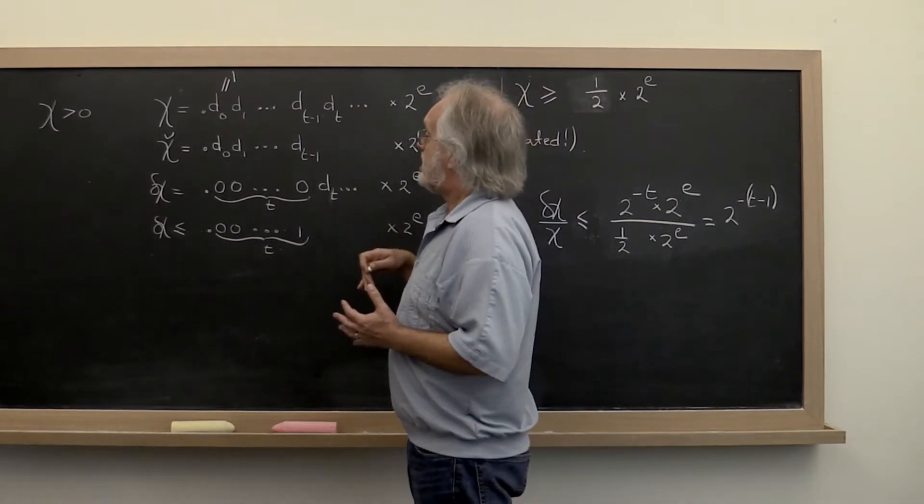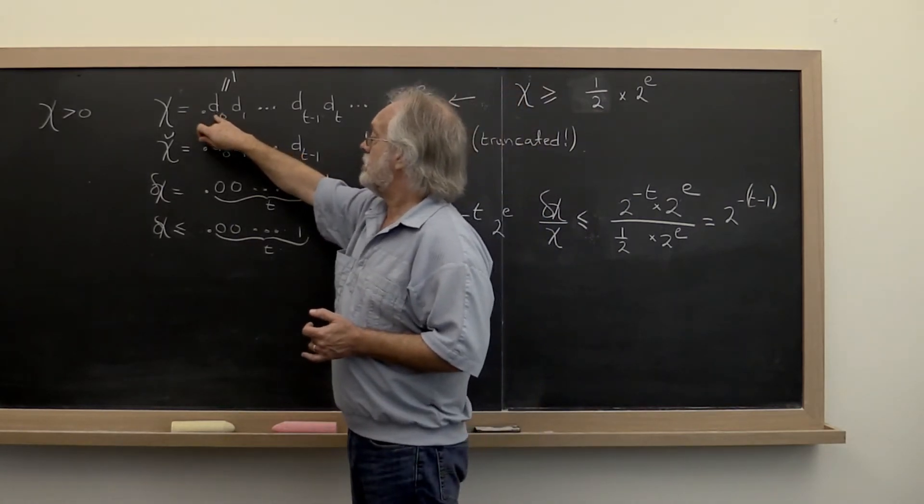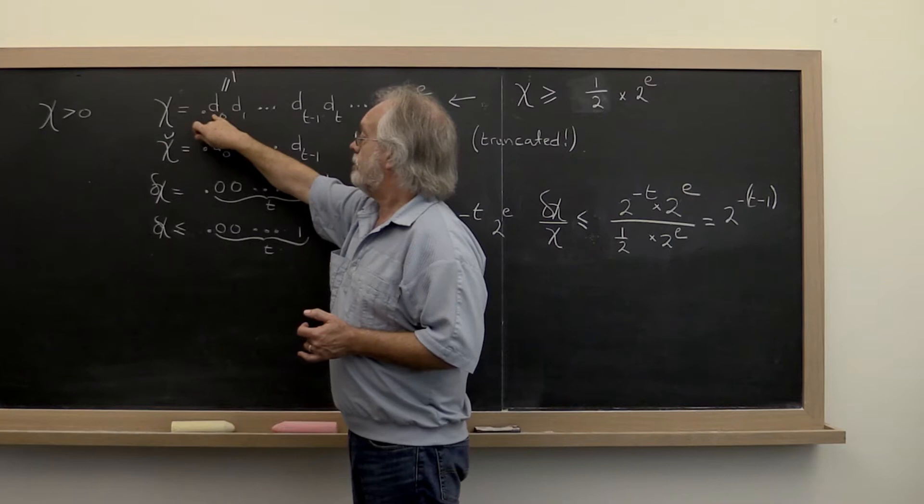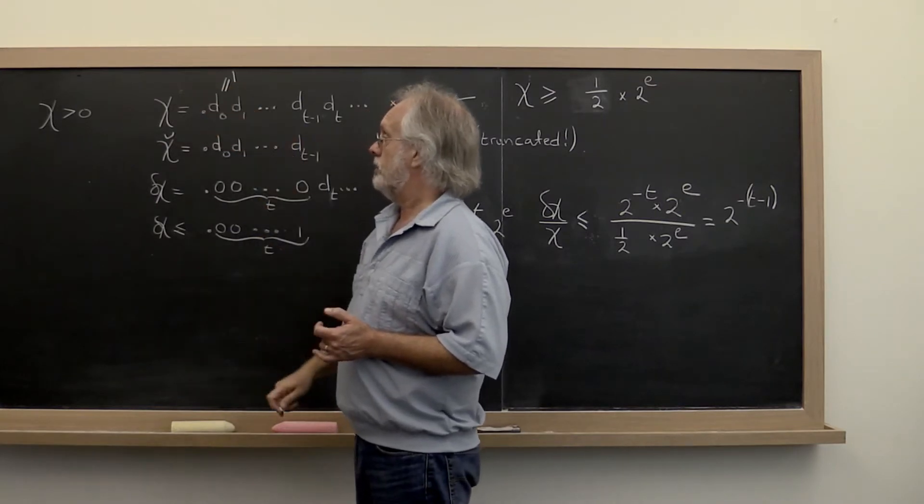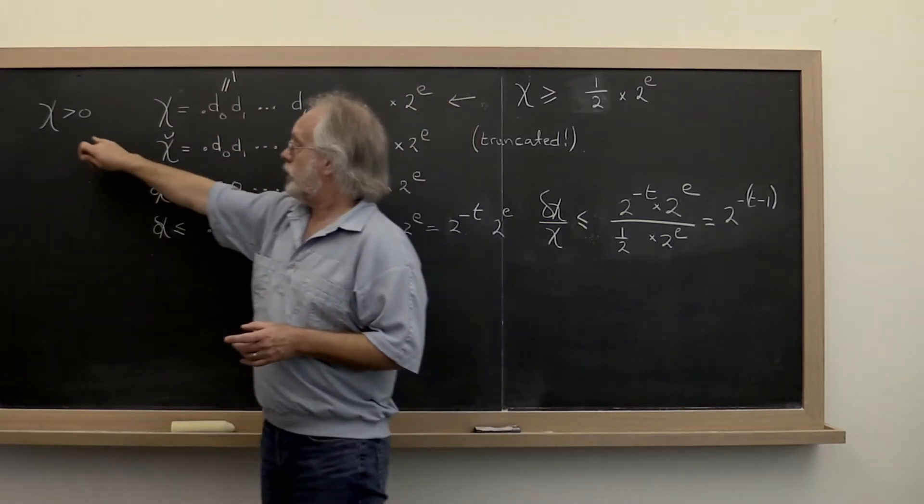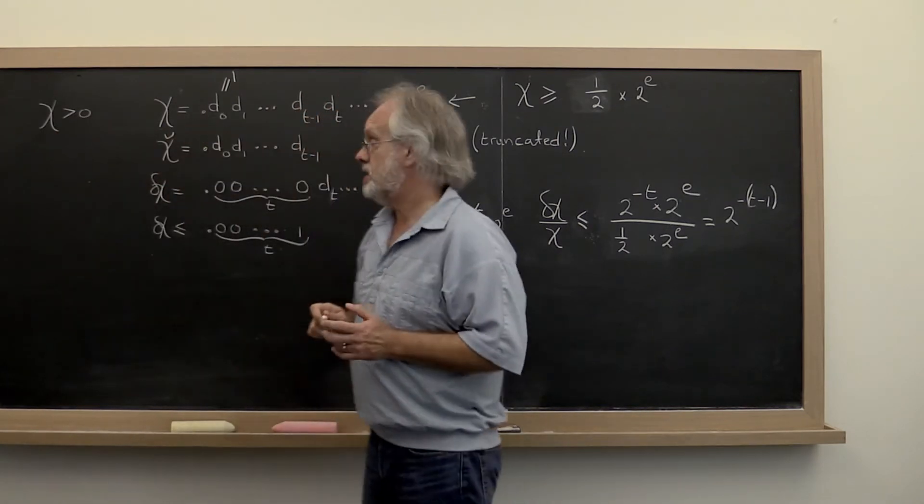And we're going to assume that that number is normalized so that the first binary digit is equal to 1. And again, we're starting with a number that's positive and therefore we can do that normalization.